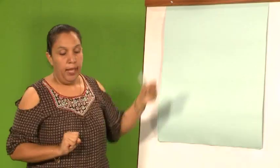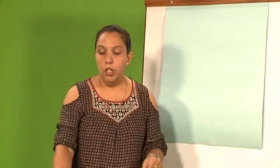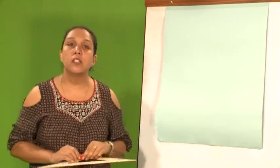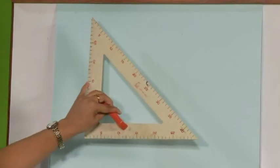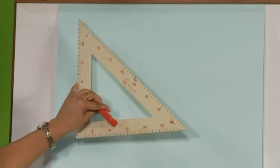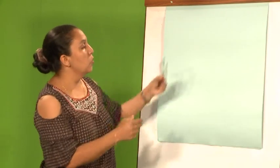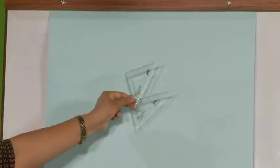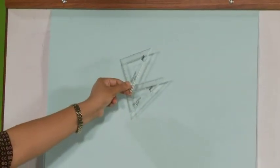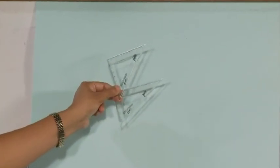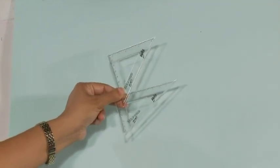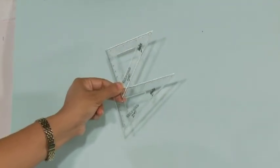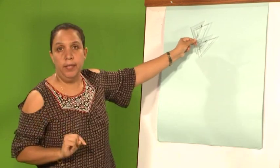The second instrument is the set square. That's the big one, but you, dear friend, are going to use the smaller one. You've got two of them. Set squares are used to draw parallel and perpendicular lines, and we are going to show you how to do that.